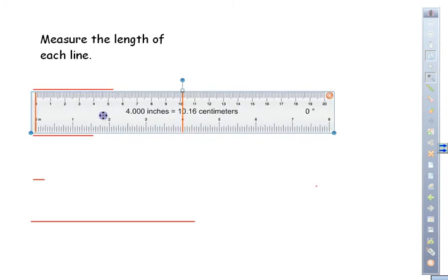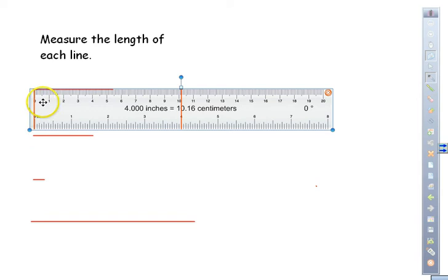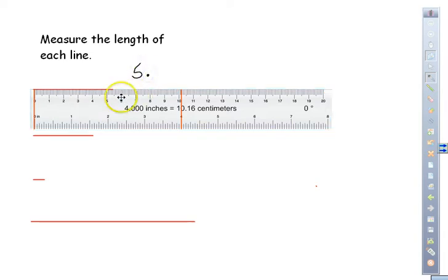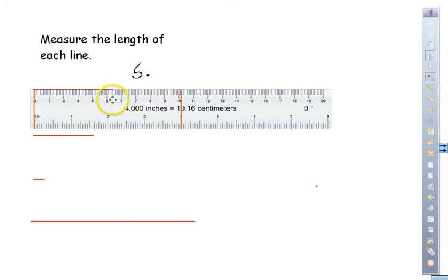Place the ruler on the line and count the whole centimeters — one, two, three, four, five. Since centimeters are divided into tenths, and there are ten millimeters per centimeter, count the small marks after the five. It goes just a little before the next mark, so it's about 0.4. The measurement is 5.4 centimeters.